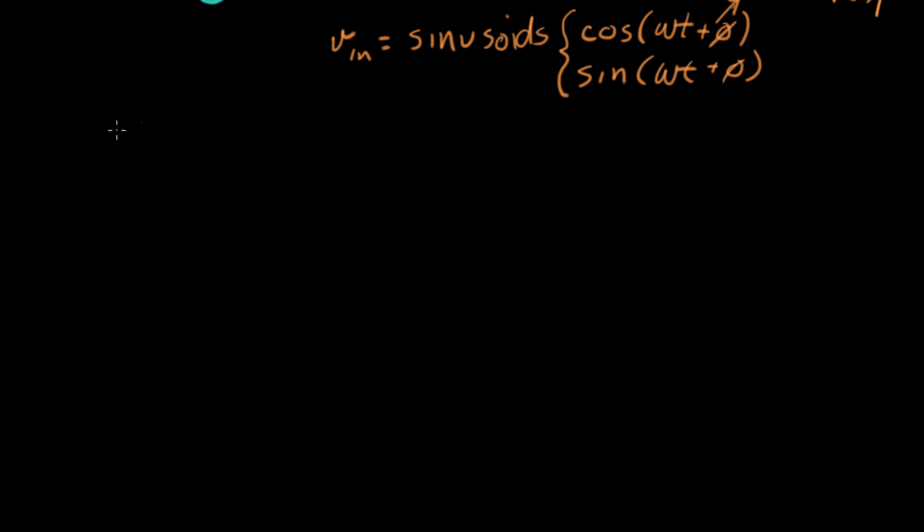So when we make this limitation to sinusoidal inputs there's a big prize at the end. And the prize is that the differential equations turn into algebra. That's the reason we're doing this. It just basically becomes really simple just like the resistor circuits that we used to do. They were all algebra, there was no calculus. We're going to turn these kinds of differential equation circuits into algebra.